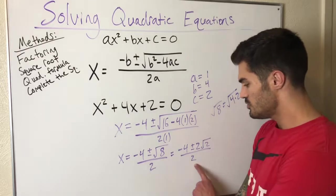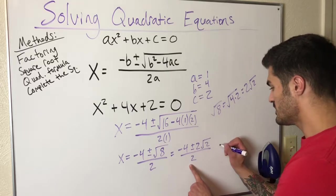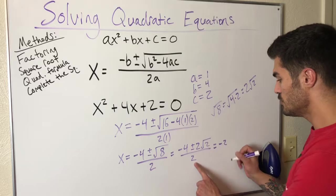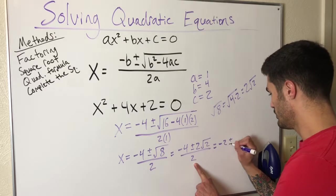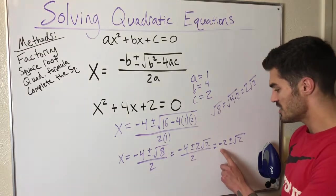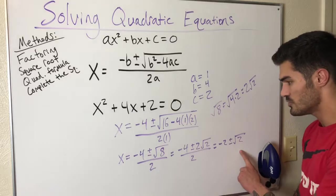Now I can use that to rewrite this. Plus or minus 2 root 2, all over 2. Now I can do the proper algebra. This 2 cancels into both these top terms. I have negative 4 over 2, that's negative 2, and I have 2 root 2 over 2, that's just root 2. So my two solutions for x are negative 2 plus root 2 and negative 2 minus root 2.